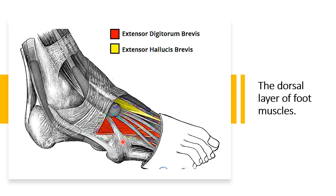Both of those muscles are innervated by the deep fibular nerve. Extensor digitorum brevis has a broad origin and attaches to the long extensor tendons of the four lateral digits. It helps the extensor digitorum longus in extending the lateral four toes at the metatarsophalangeal and interphalangeal joints, assisting the extensor digitorum longus in their action.